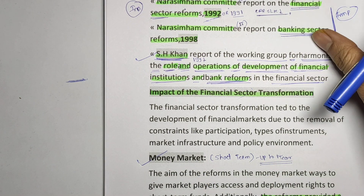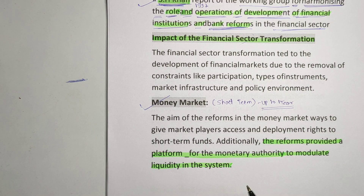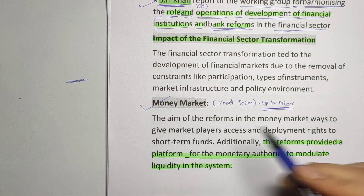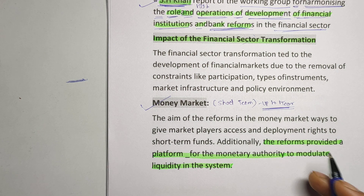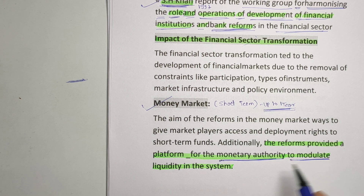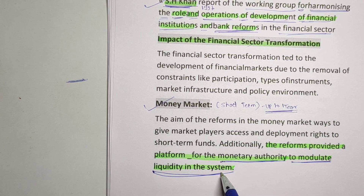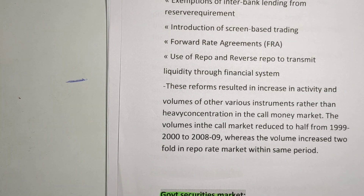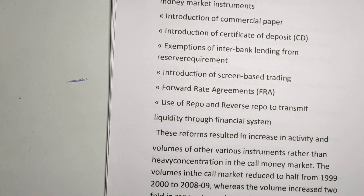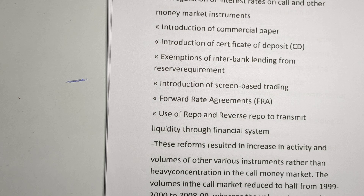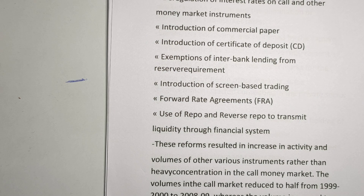Now let's see the impact of financial sector transformation on the money market. The money market is where securities are traded for a very short term, that is up to one year. Due to money market reforms, the monetary authority is able to modulate liquidity in the system — it becomes easy to manage liquidity. You can read further reforms through the notes provided on our Telegram channel.